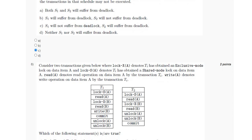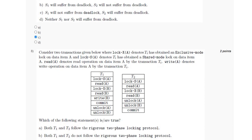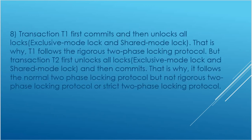For the eighth question, two transactions are given involving shared locks and exclusive locks, and we have to identify the correct statement. Transaction T1 first commits and then unlocks all locks — both exclusive mode and shared mode — so T1 follows the rigorous two-phase locking protocol. Transaction T2 first unlocks all locks — exclusive and shared mode — and then commits, so it follows the normal two-phase locking protocol but not rigorous two-phase locking.